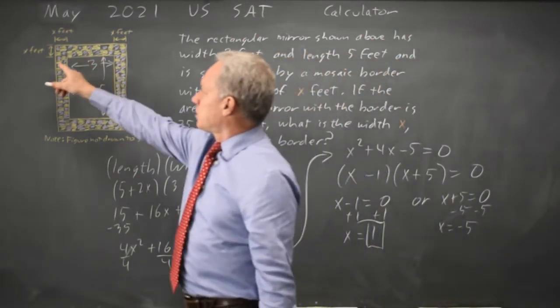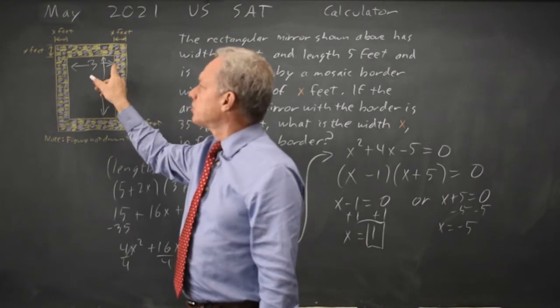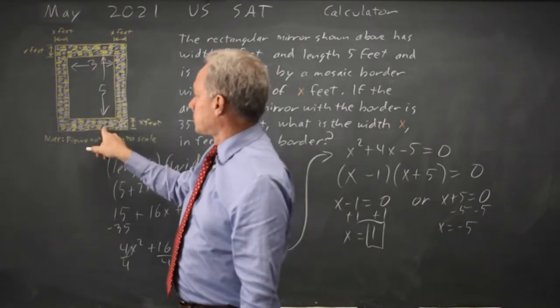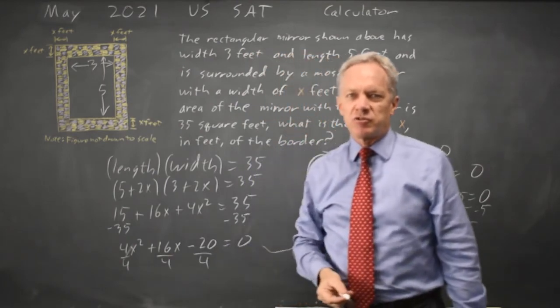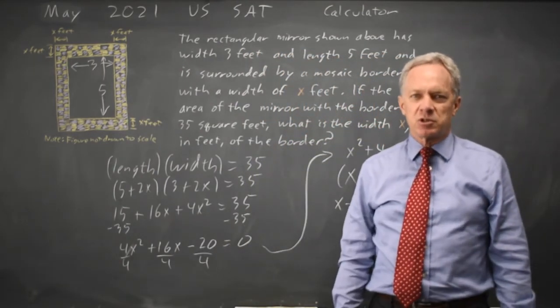And if we check that, that makes the whole frame 3 plus 1 plus 1 is 5, by 5 plus 1 plus 1 is 7. 5 by 7 is an area of 35. So X equals 1 is the correct answer to this word problem.